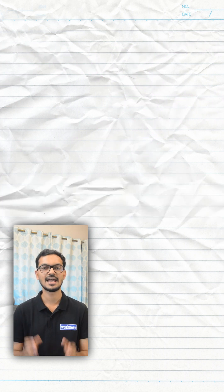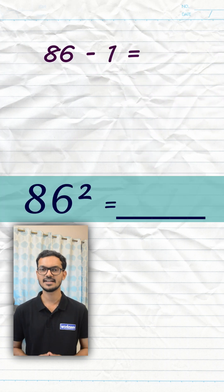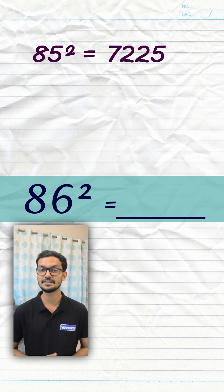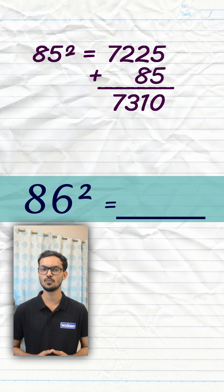Let's consider one more example. 86 square. First find 85 square, which is equal to 7225. Add 85 to it, we will get 7310.